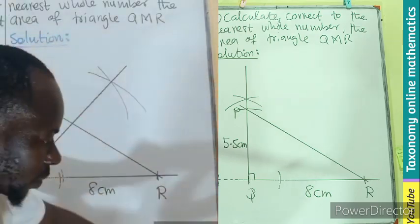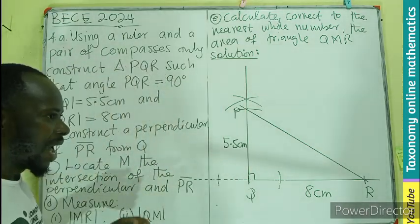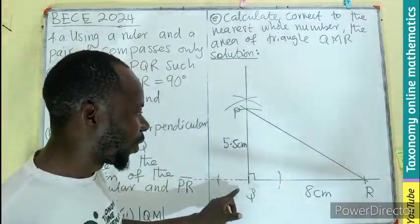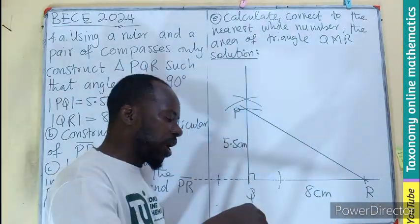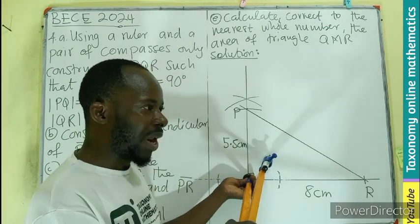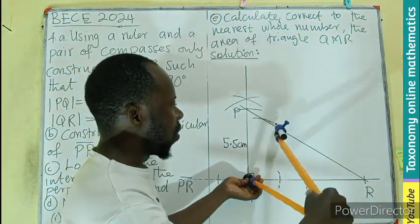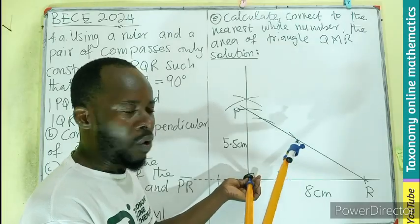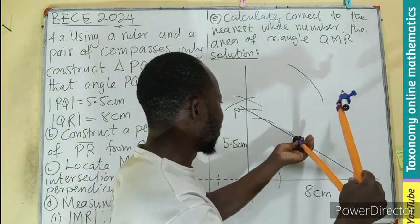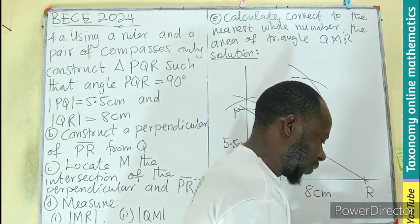That was a bisector — not a perpendicular. So for the correction: a perpendicular on line PR coming from Q means we stand with our compass point at Q, open the compass to make two cuts on the line PR, then from each of those arcs we make an arc above or below.